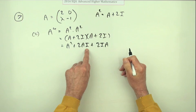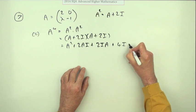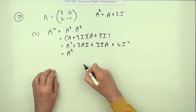Just tidy that up: that's A squared plus, multiplying by the identity element of course leaves unchanged, so it's plus 4A, and I squared just multiplies to I.